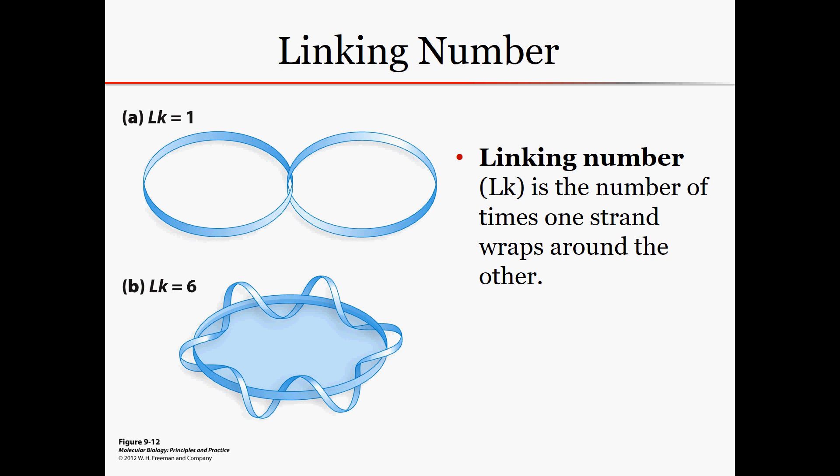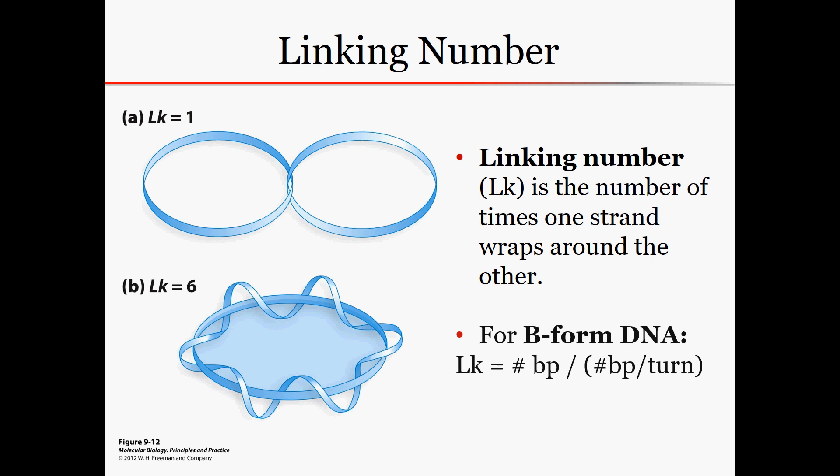The linking number is the number of times one strand wraps around the other. Shown on the left is not DNA, but just any two circles. If they interlink only once, the linking number would be one, and if they cross over each other six times, the linking number would be six. For any circular DNA, we can calculate the linking number by knowing how long the DNA circle is and our rise — the 10.5 base pairs per turn.